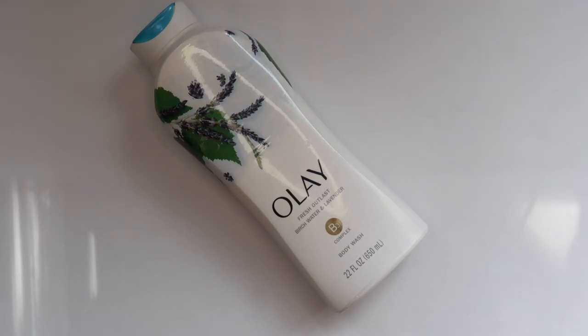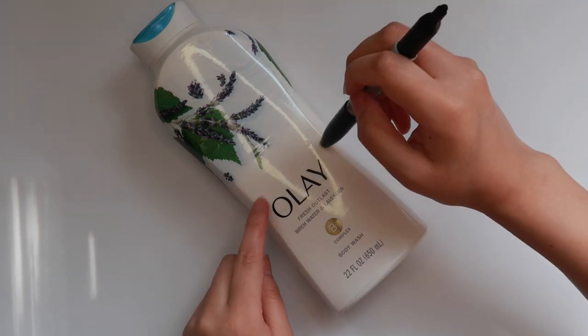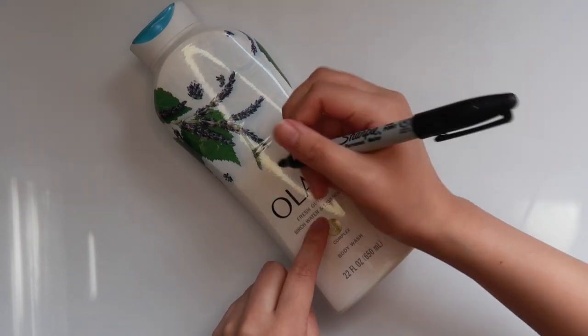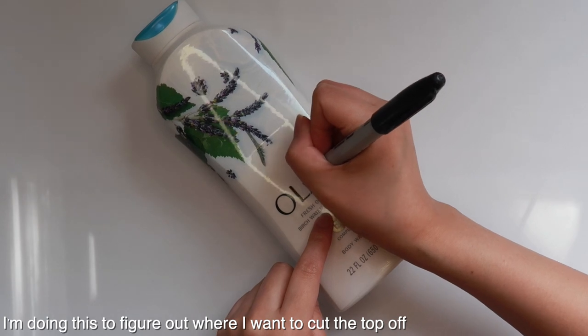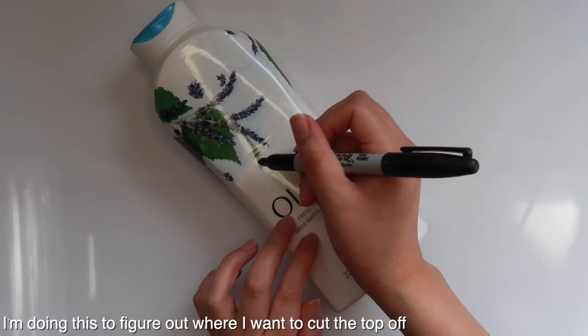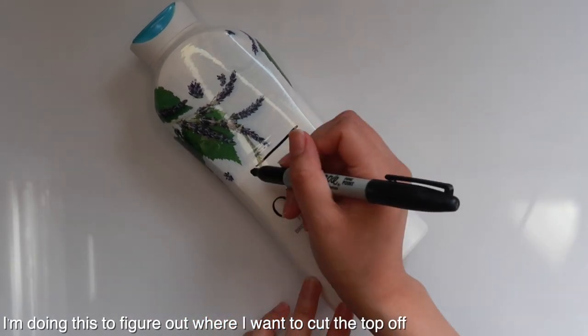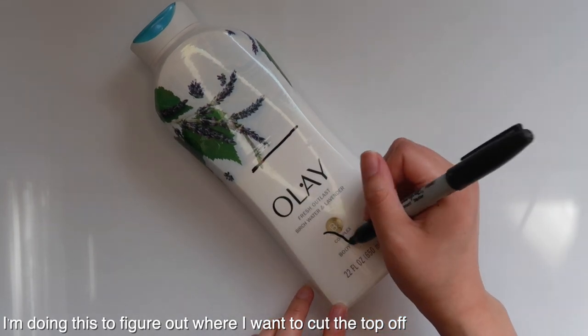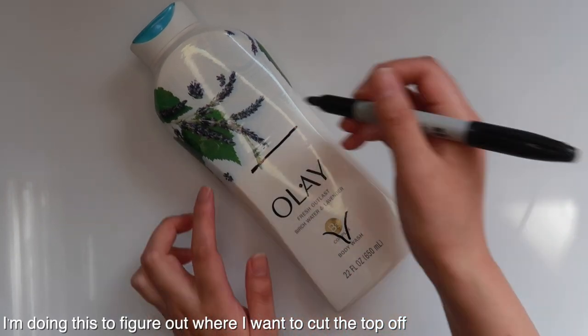The first thing that I'm gonna do is outline how I want to distribute the body proportions on this bottle. First I'm gonna draw in the belly button, then where I want the boobs to go, and then around where I want her legs to start, and lastly where I'm gonna cut off the top of the bottle.